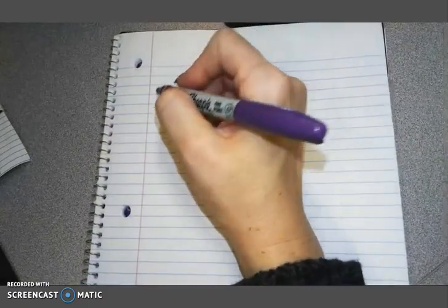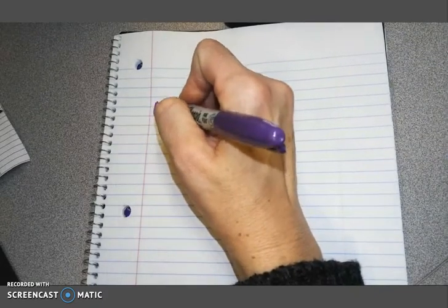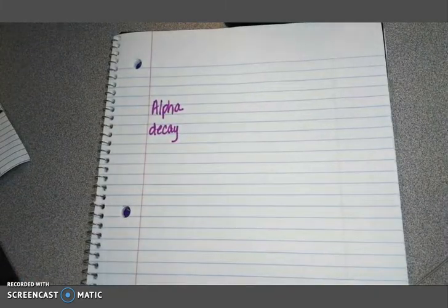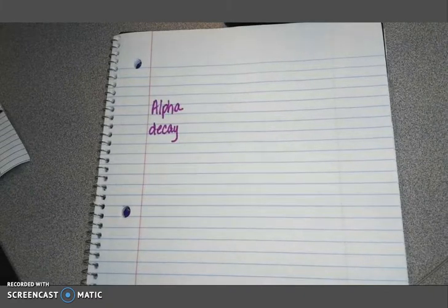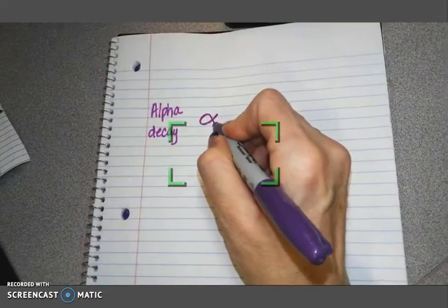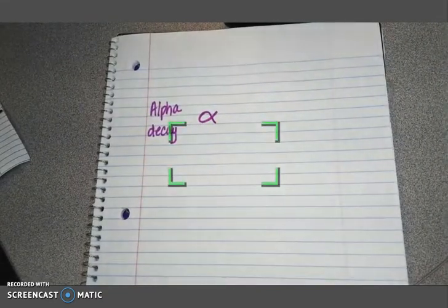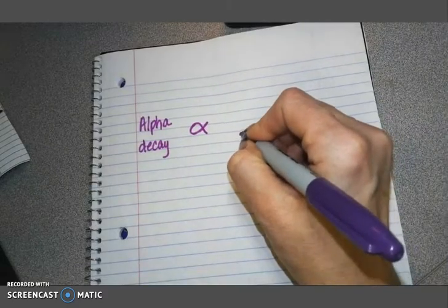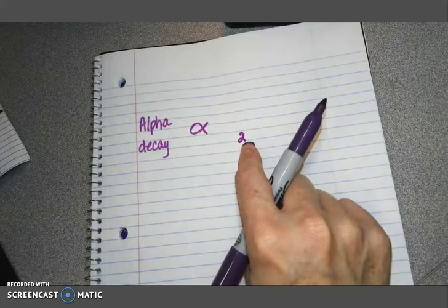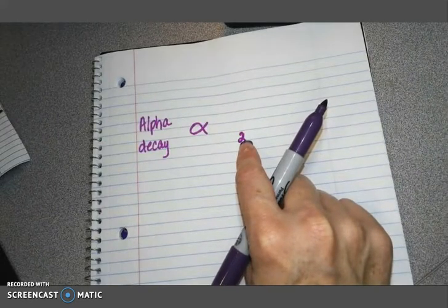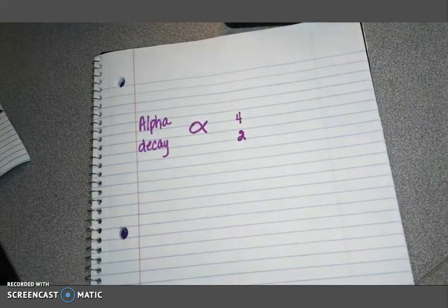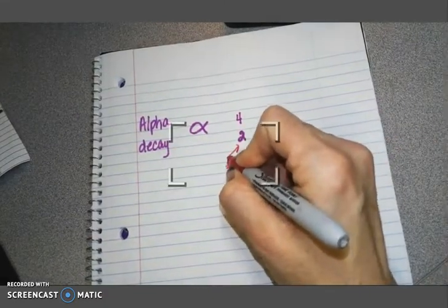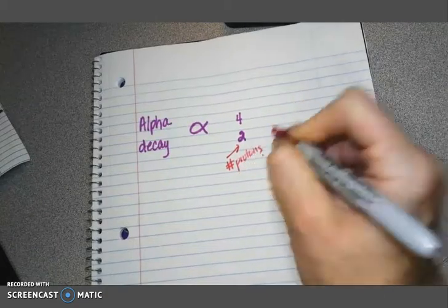Alpha decay releases what's called an alpha particle, and an alpha particle is written as the Greek letter alpha, and an alpha particle is essentially composed of two protons and two neutrons. So the number on the bottom I'm going to put is the number of protons. The number on top is going to be a mass number. The mass number is the number of protons plus neutrons. So here we have the number of protons, and then this is the mass number.